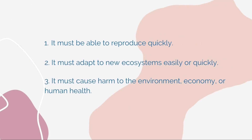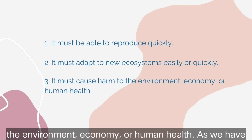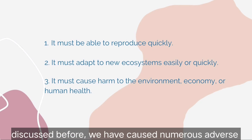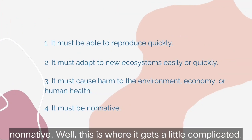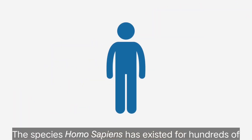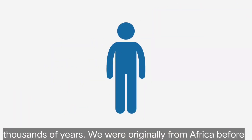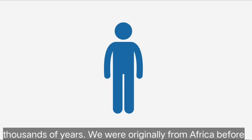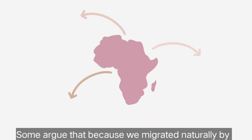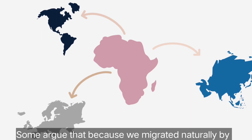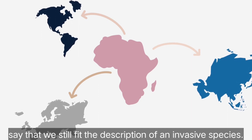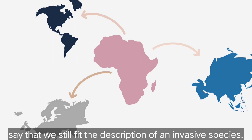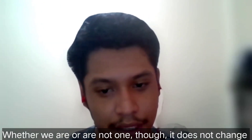Number three: it must cause harm to the environment, economy, or human health — as we have discussed, we have caused numerous adverse effects on the environment. Number four: it must be non-native. This is where it gets complicated. Homo sapiens existed for hundreds of thousands of years, originally from Africa, before naturally migrating to other continents. Some argue that because we migrated naturally, we can be considered native, but others say we still fit the description of an invasive species.